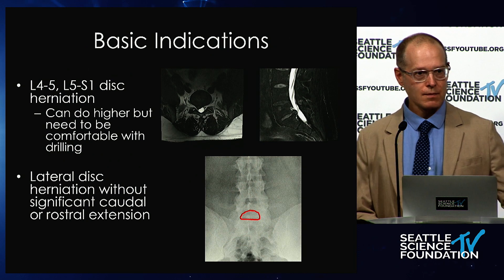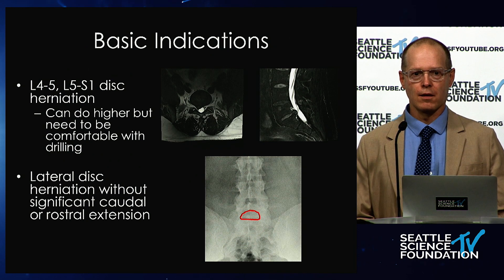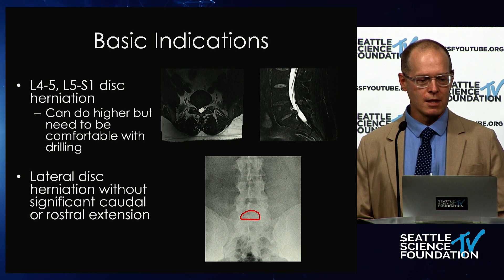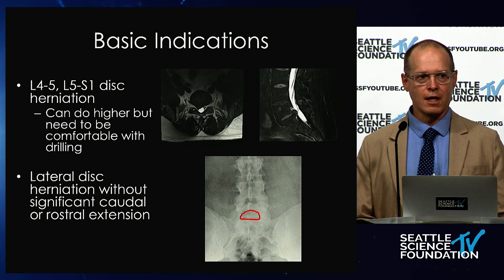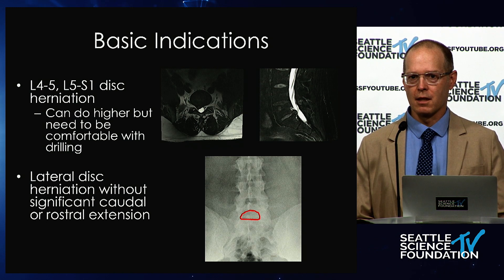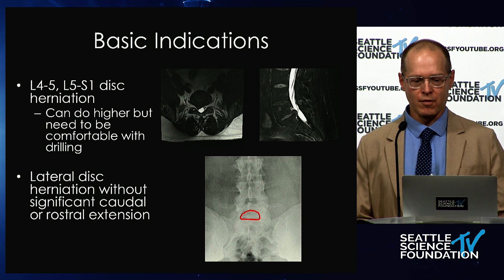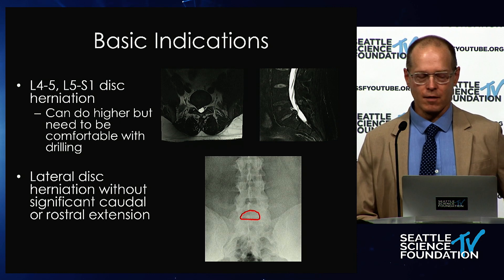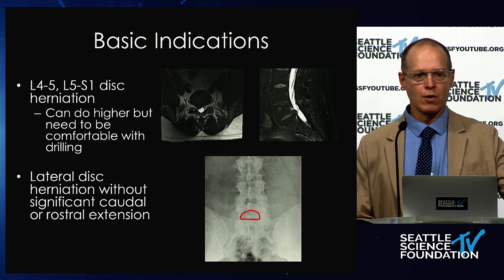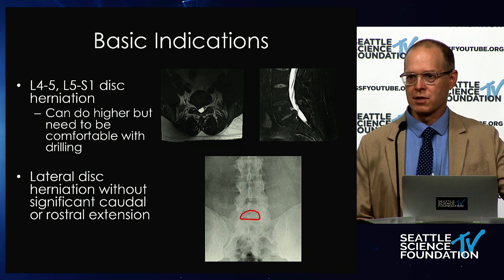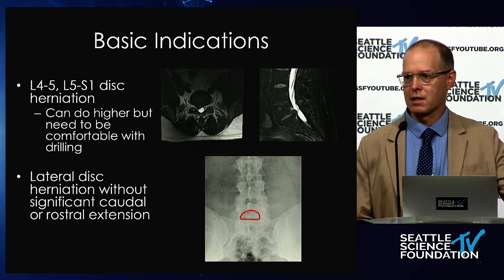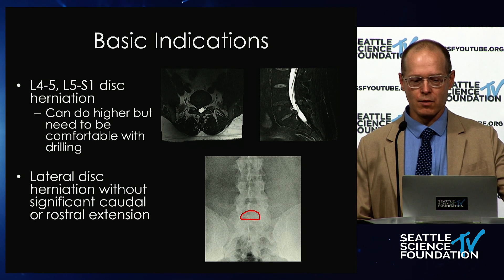Basic indications: L4-5 and L5-S1 are the best indications — a lateral disc herniation without significant caudal or rostral extension. L5-S1 is pretty common, which increased the likelihood that I'd have cases to do. That's important both from the standpoint of learning and from acquiring instrumentation equipment, since there's a cost associated with it and you want to make sure you're using it routinely.